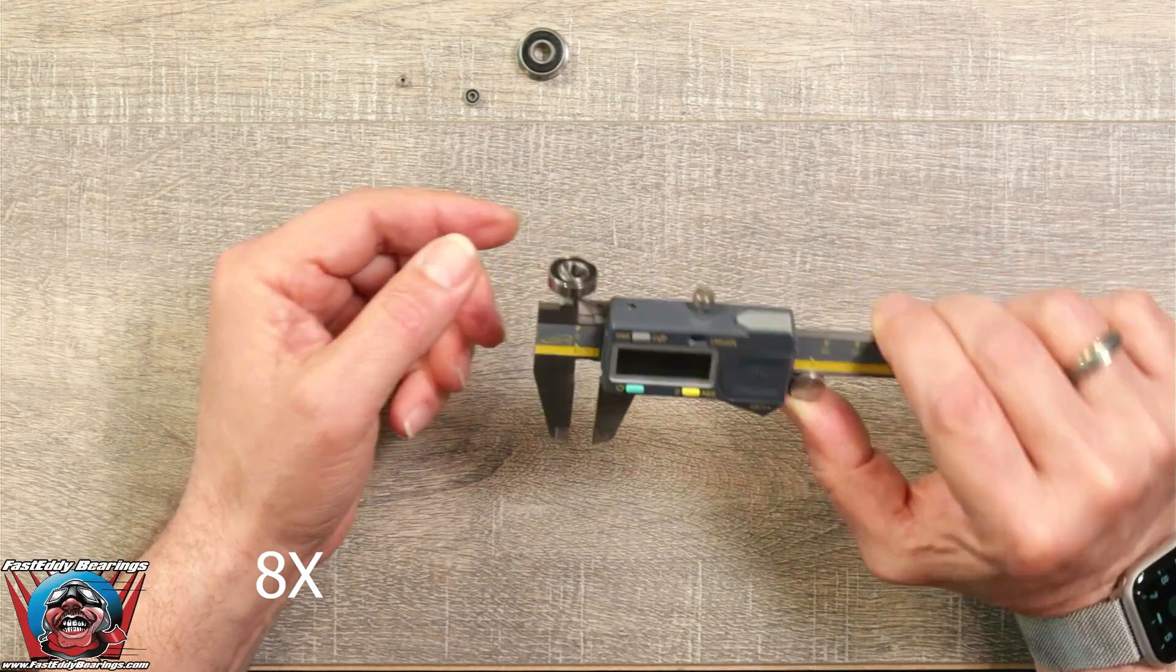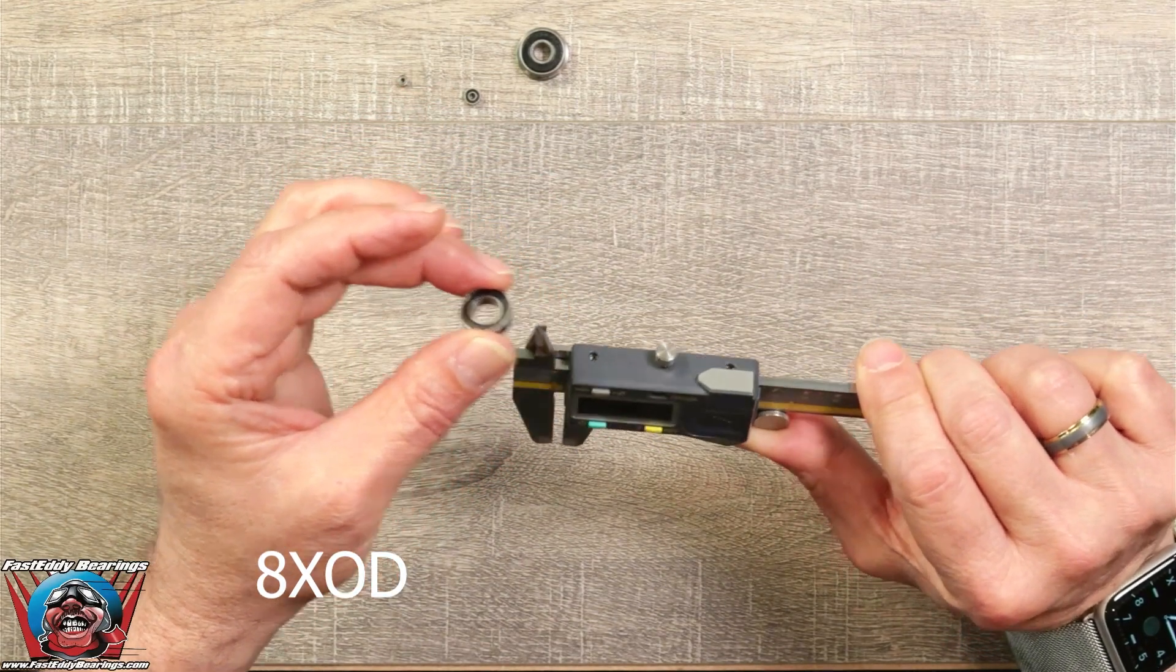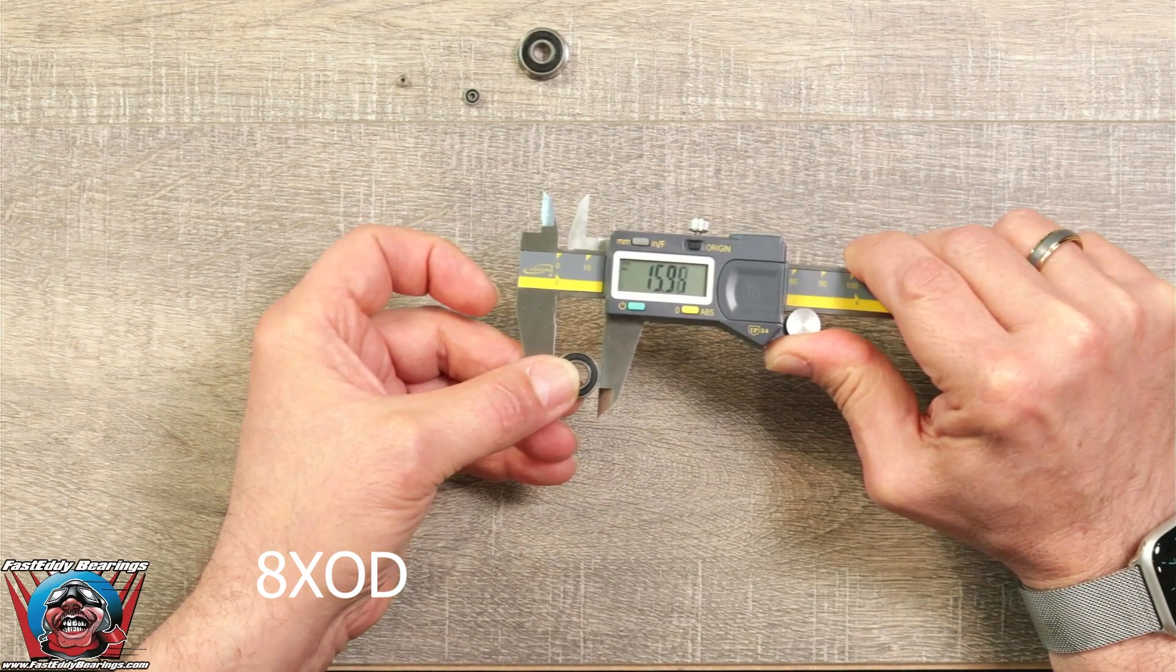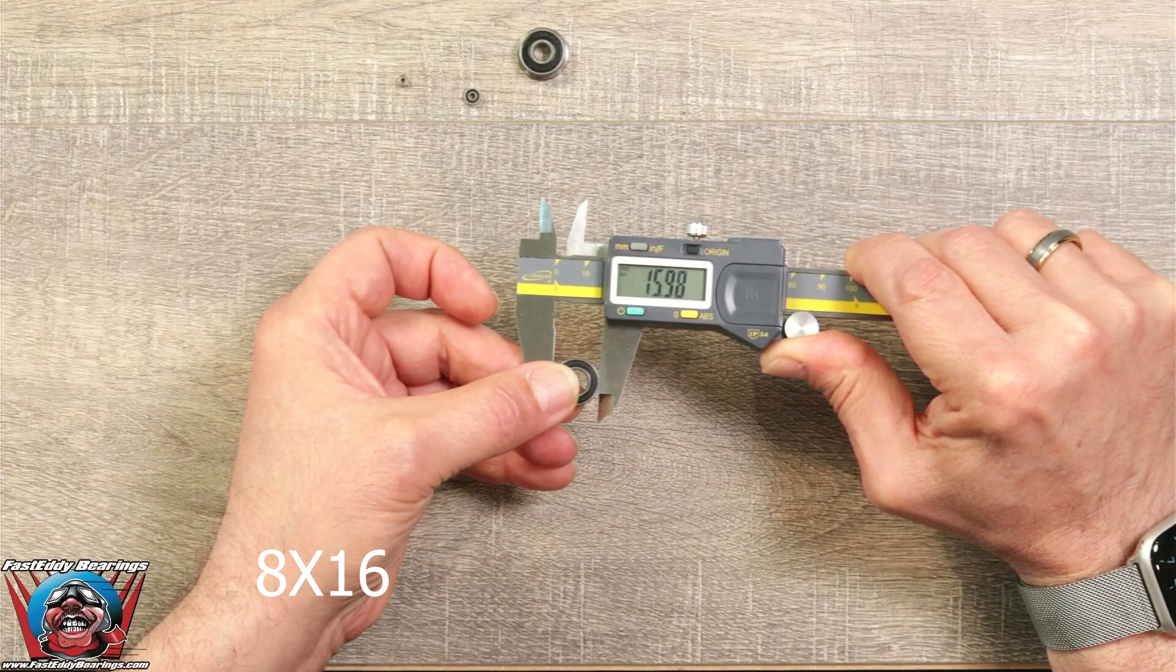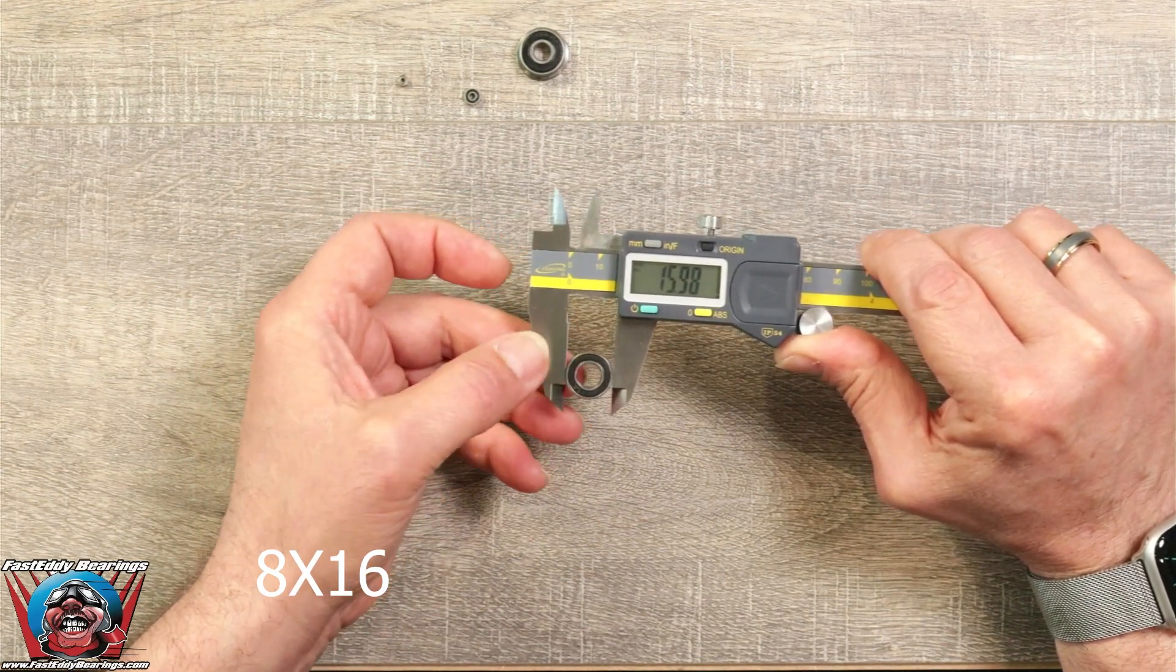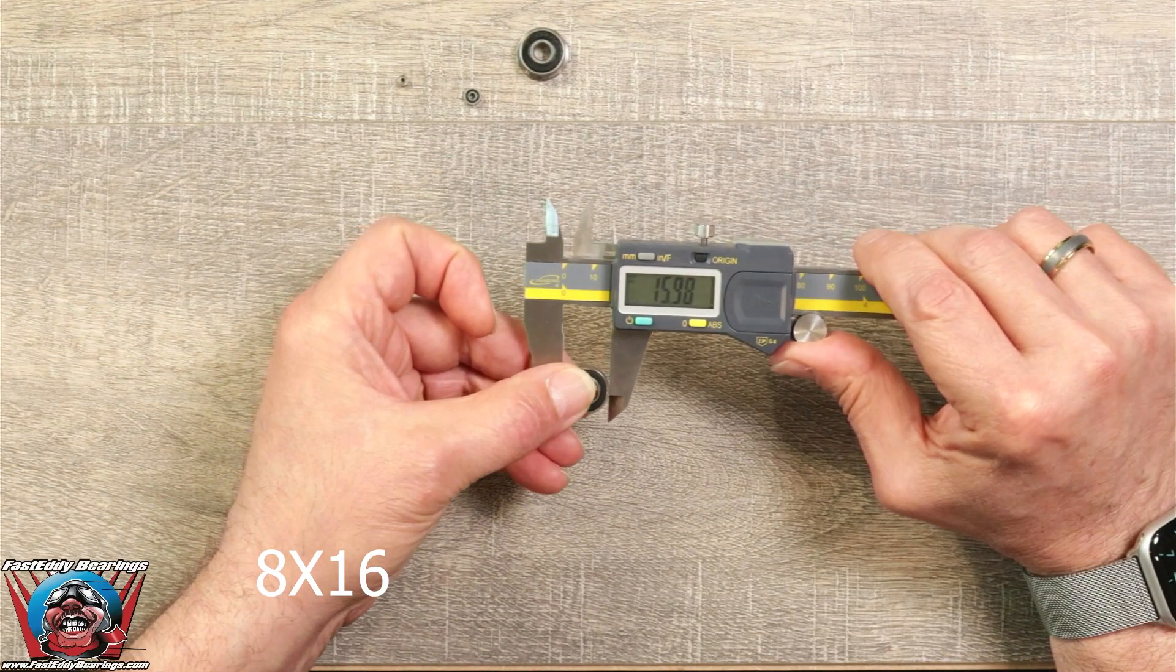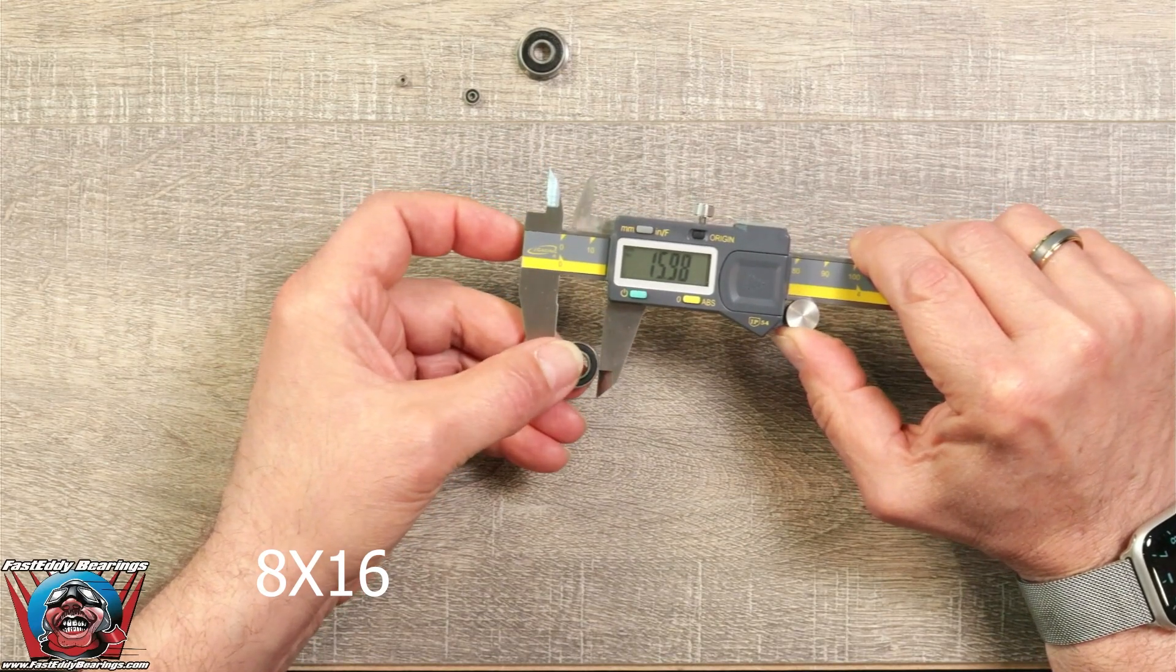The second measurement that we want is going to be the OD, or the outside diameter. So we're going to go ahead and use this portion and measure the outside diameter, which is a 16 millimeter. It's not always exact because these are an inexpensive set of calipers, but it's going to be very close. So 15.98, you're going to know is a 16. So again, we have the inside dimension of eight, the outside dimension of 16.